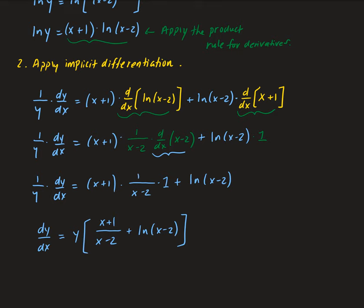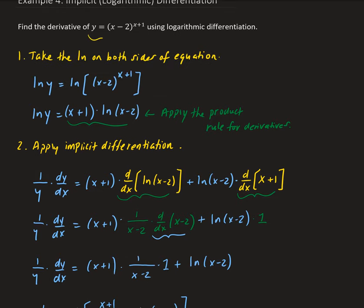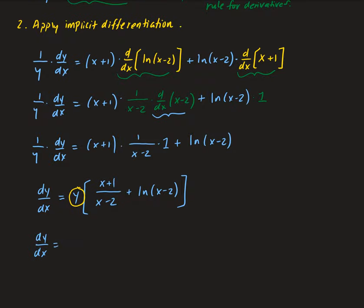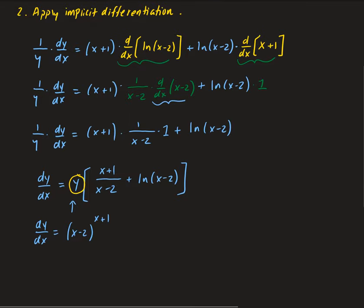From here we can express our derivative entirely in terms of x by replacing y with our original function. Since y equals x minus 2 raised to the power of x plus 1, we have dy/dx equals x minus 2 raised to the power of x plus 1, multiplied by x plus 1 over x minus 2 plus natural log of x minus 2. That is our result.